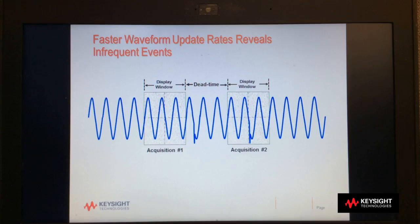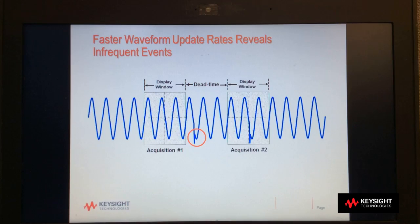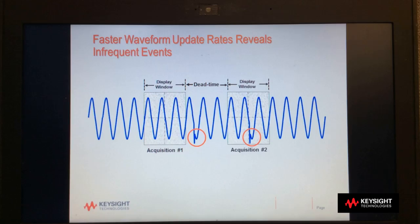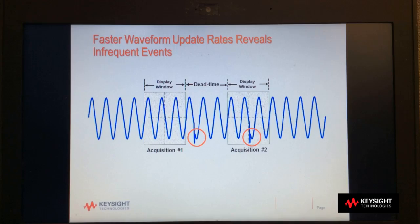In this example, the dead time has been reduced, and now the scope missed the first glitch, but it caught the next one. The bottom line is faster waveform update rates and lower oscilloscope dead times will improve the scope's probability of capturing random and infrequent events.